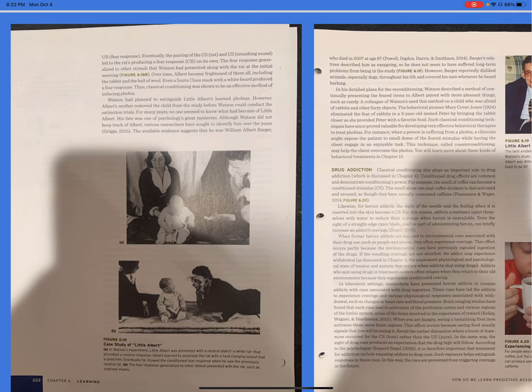The fear response generalized to other stimuli that Watson had presented along with the rat at the initial meeting, Figure 6.18b. Over time, Albert became frightened of them all, including the rabbit and the ball of wool. Even a Santa Claus mask with a white beard produced a fear response. Thus, classical conditioning was shown to be an effective method of inducing phobia.